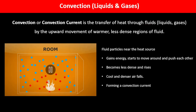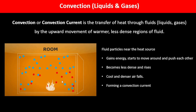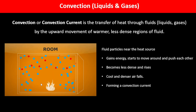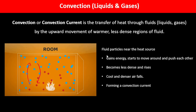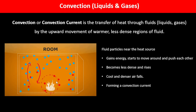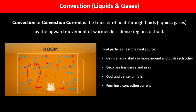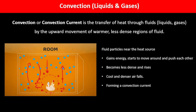Looking at this animation: when particles gain heat energy they spread apart, lose density, and move upward. At the same time, the colder particles drop down. As they fall nearer to the heat source they become hot again and rise, forming the convection current. The fluid particles near the heat source gain energy, move around, push each other, become less dense, and rise, while the denser cooler particles fall — this is how fluids, both liquids and gases, are heated.